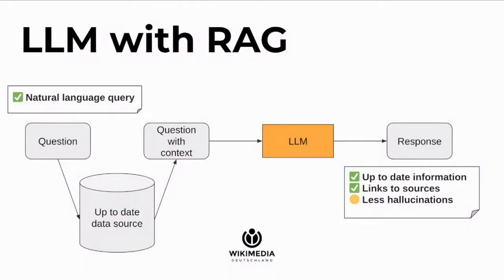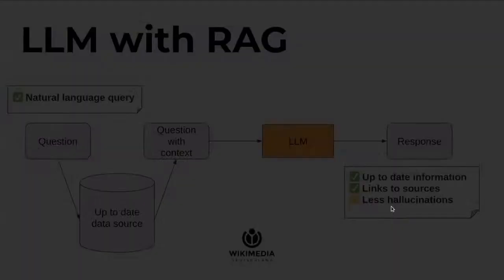To address those issues we can implement Retrieval Augmented Generation, which we've seen several times at this conference. We still take the user's question, but we use it to access an up-to-date data source and embed parts of that data into the LLM prompt as context. This way the response can contain up-to-date information, we can link to sources, and we should have fewer hallucinations.